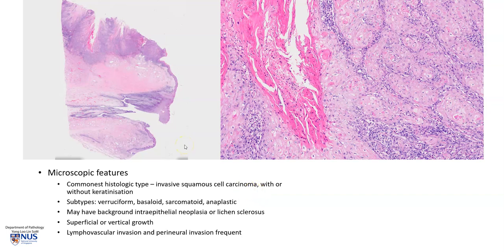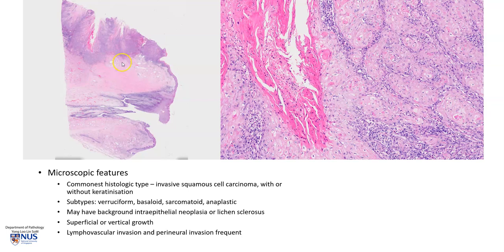Microscopically — and there will be a separate video detailing the microscopic features on a virtual slide — the commonest histologic type is the classical invasive squamous cell carcinoma, and there may or may not be keratinization. Here is an example. You can see the tumor here. This is the epithelium of the glans penis, and this is the penile urethra. We can see that it is invading into the lamina propria and corpus spongiosum.